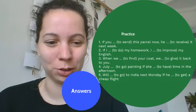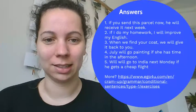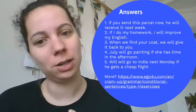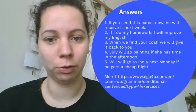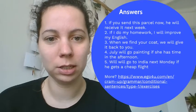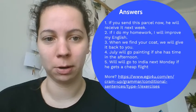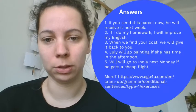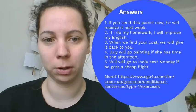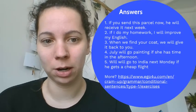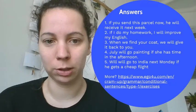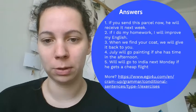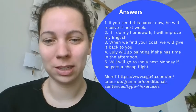You've started me again, so I assume you're done. Let's look at the answers. For each sentence we figure out condition vs. consequence. Sentence one: I see 'if' in the first part, so that's the condition — present simple: 'if you send this parcel now.' The consequence gets 'will' plus verb: 'he will receive it next week.' Sentence two: same structure — 'if I do my homework' (present simple), 'I will improve my English' (will plus verb).